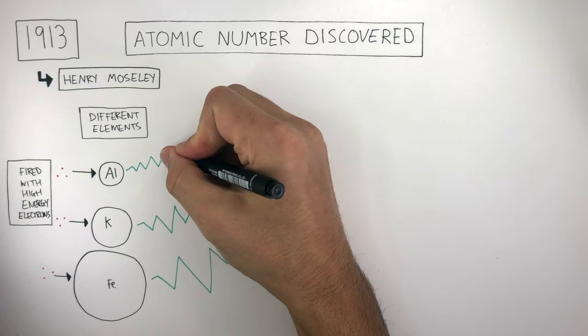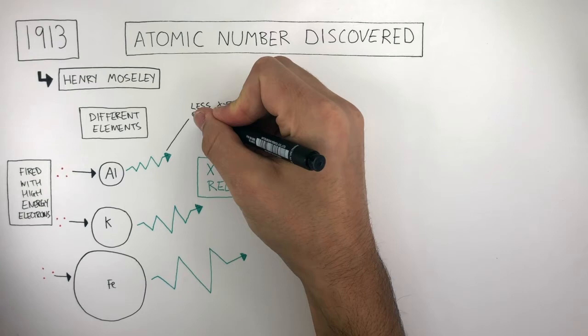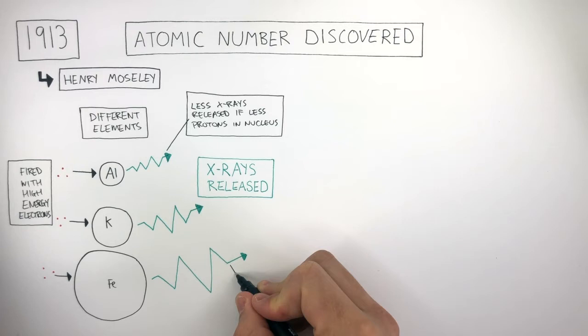Moseley noticed how the smaller the atom meant less x-rays were released if there were fewer protons in the nucleus, and therefore, more x-rays were released if more protons were in the nucleus.